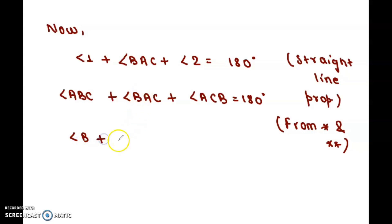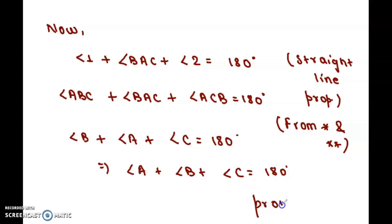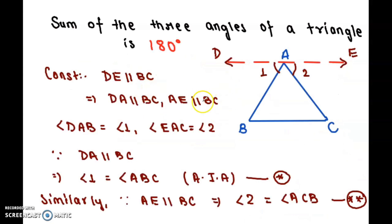Since angle ABC is the same as angle B, angle BAC is angle A, and angle ACB is angle C, we get angle A plus angle B plus angle C equals 180 degrees. Hence proved. I hope you understood this proof and liked the video — don't forget to subscribe.